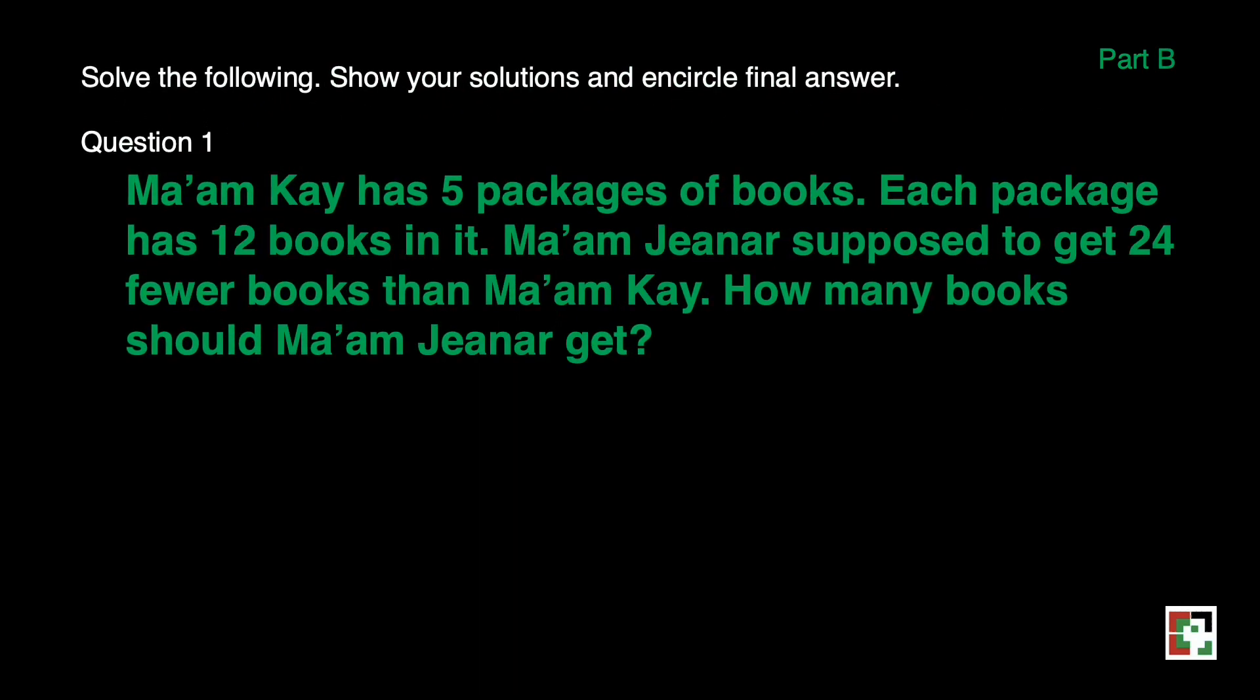We are now done with part A. This time we'll have part B. We'll have problem solving for question number 1. Mom K has 5 packages of books. Each package has 12 books in it. Mom Jinar is supposed to get 24 fewer books than Mom K. How many books should Mom Jinar get?